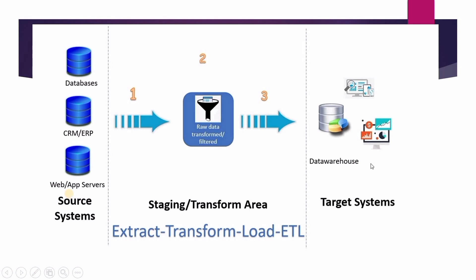In the second step we perform some transformation on that data. That transformation may be insertion, updating, or deletion. Suppose you extracted data from Oracle and you are manipulating that data — inserting new records, updating old records, or deleting some records. You perform this transformation in the staging area, which is our transforming area where we manipulate the data.